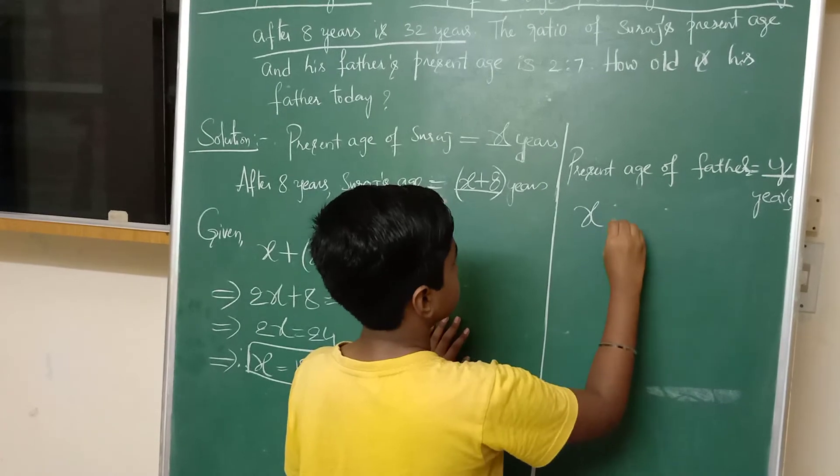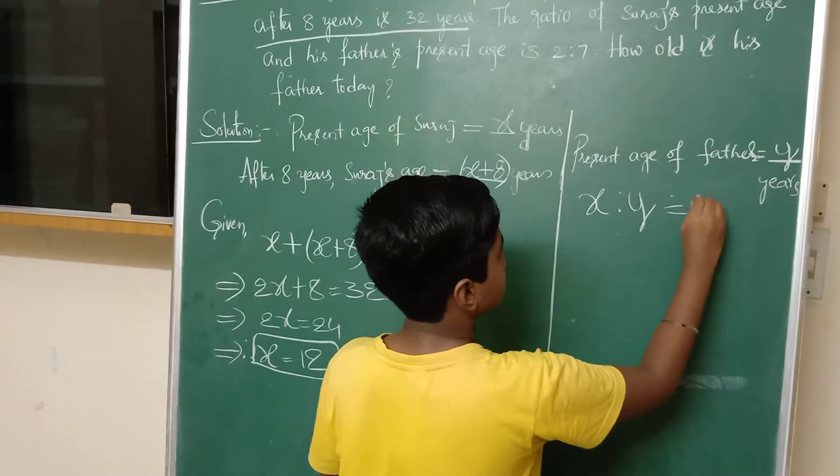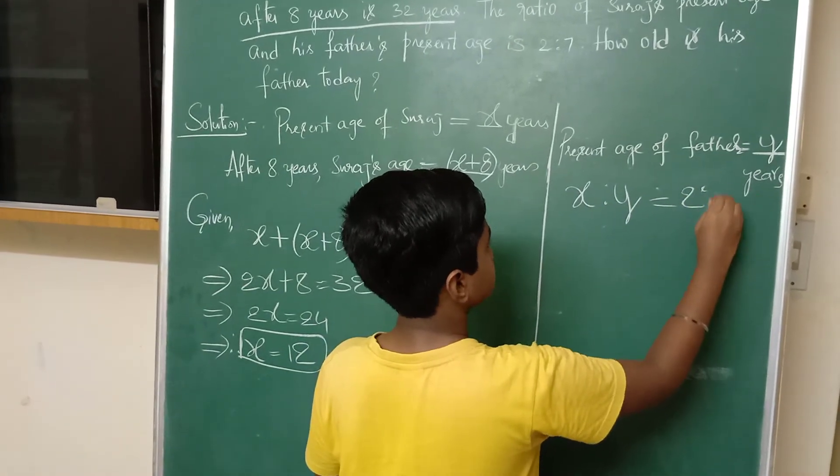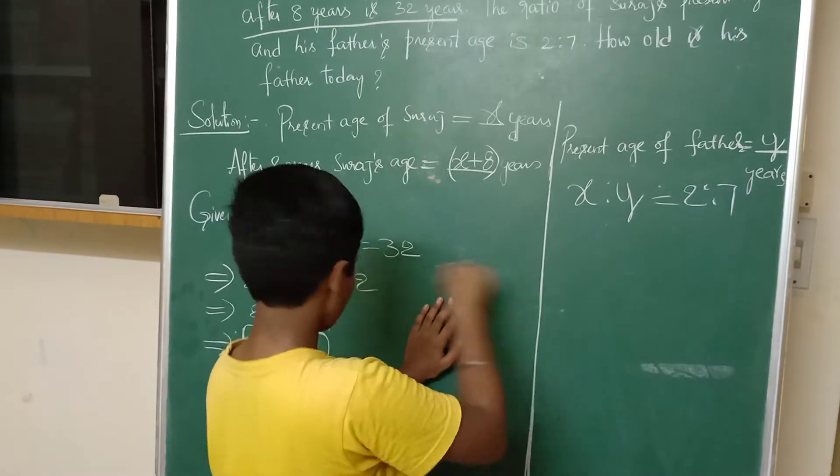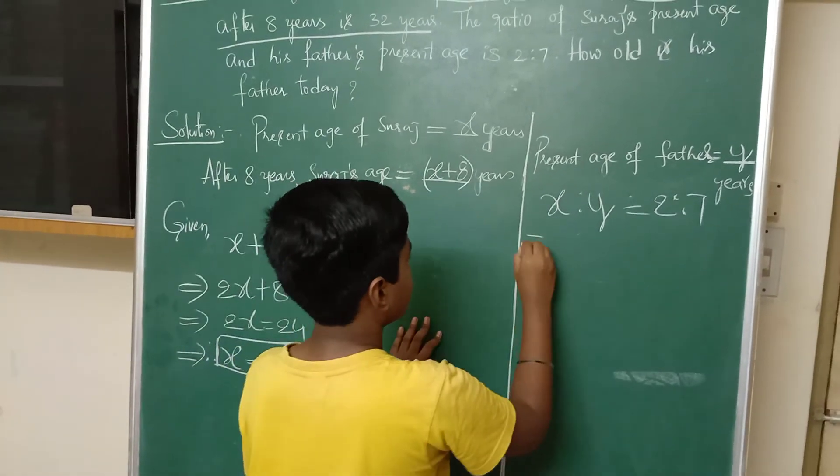The ratio of Suresh's present age and his father's age is 2 is to 7. X is to Y is equals to 2 is to 7. We know X is equals to 12.